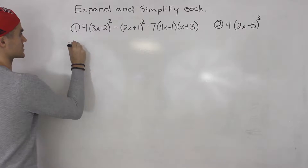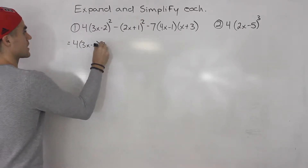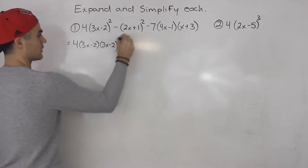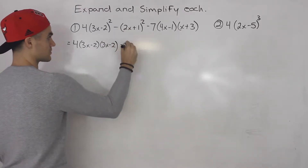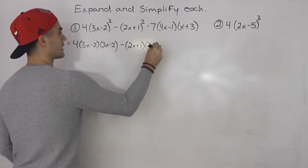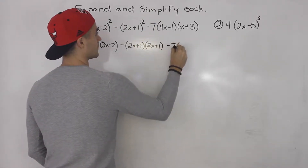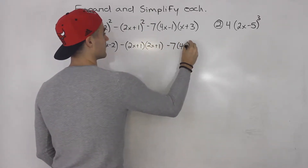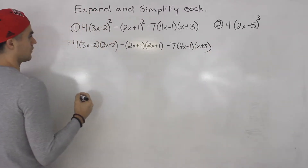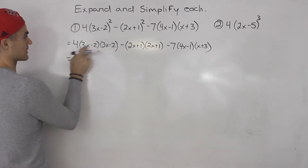I'm going to rewrite this as (3x minus 2) times (3x minus 2). And over here we got minus (2x plus 1) squared, which I'll rewrite the same way. And then the remaining term I'll rewrite as is for now. For each of these we're going to have to FOIL out the brackets.